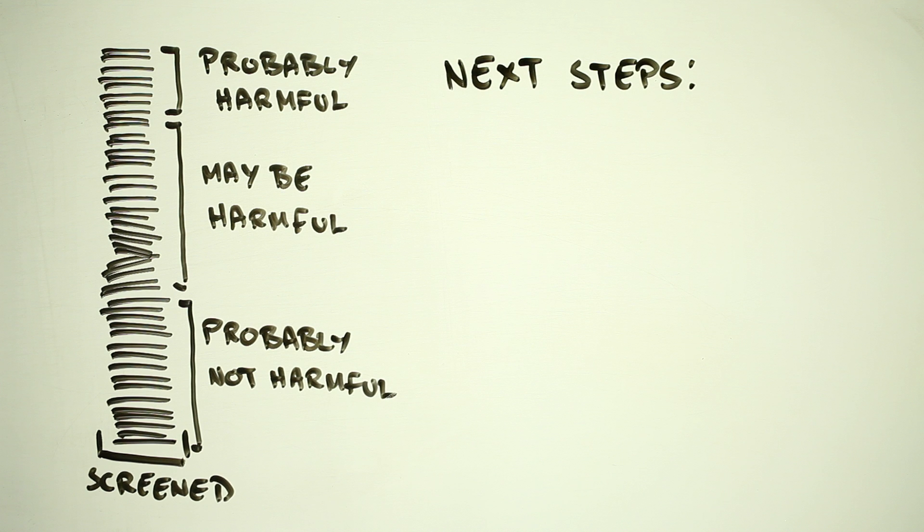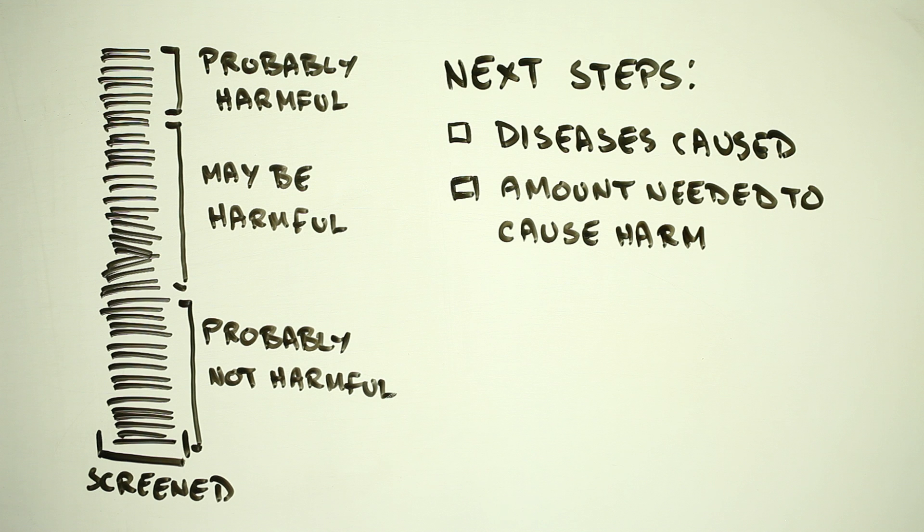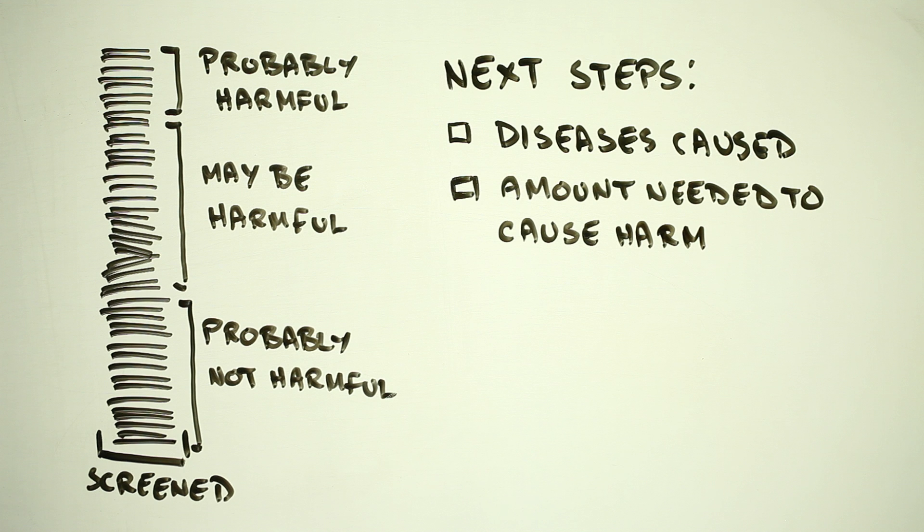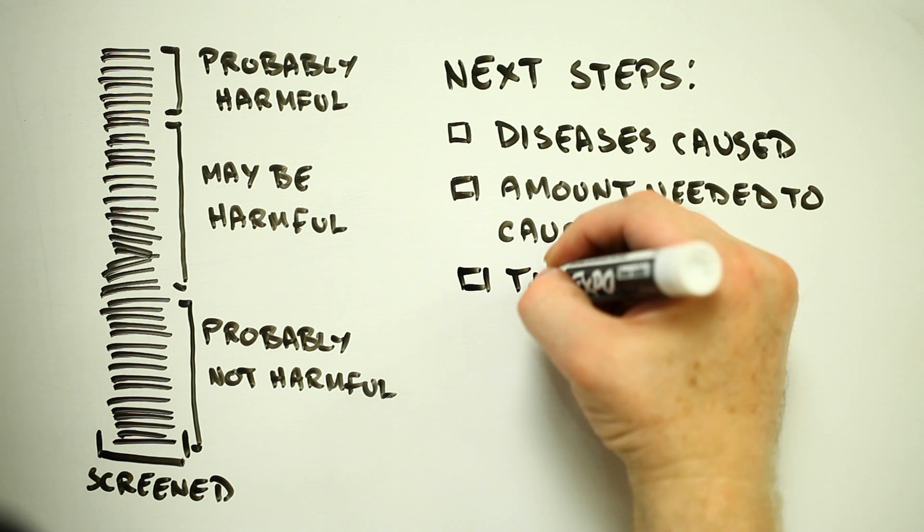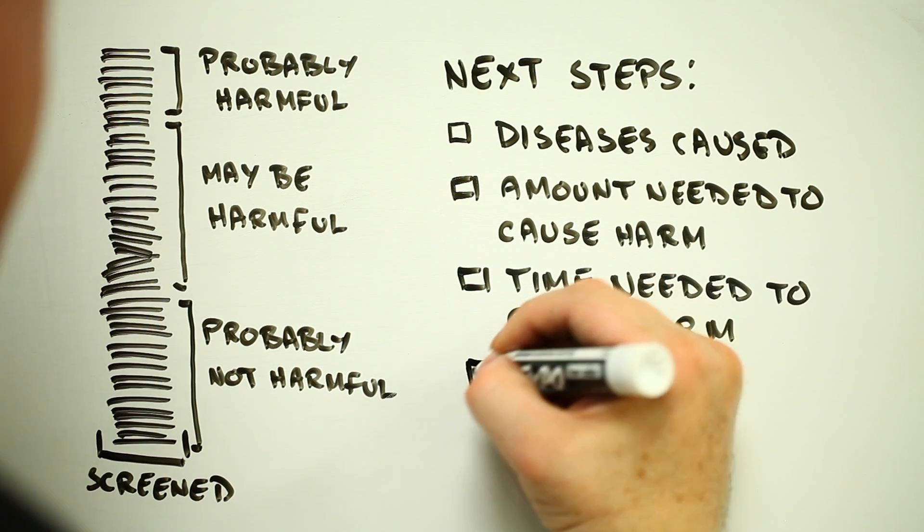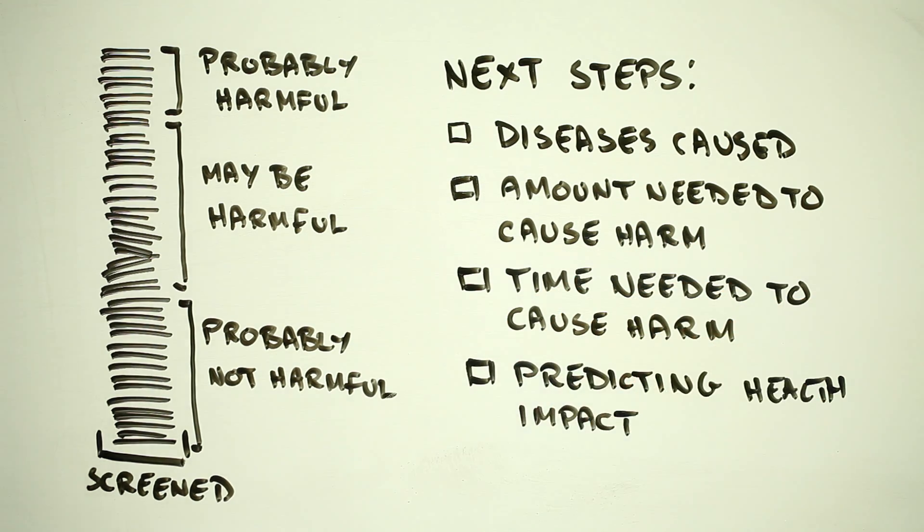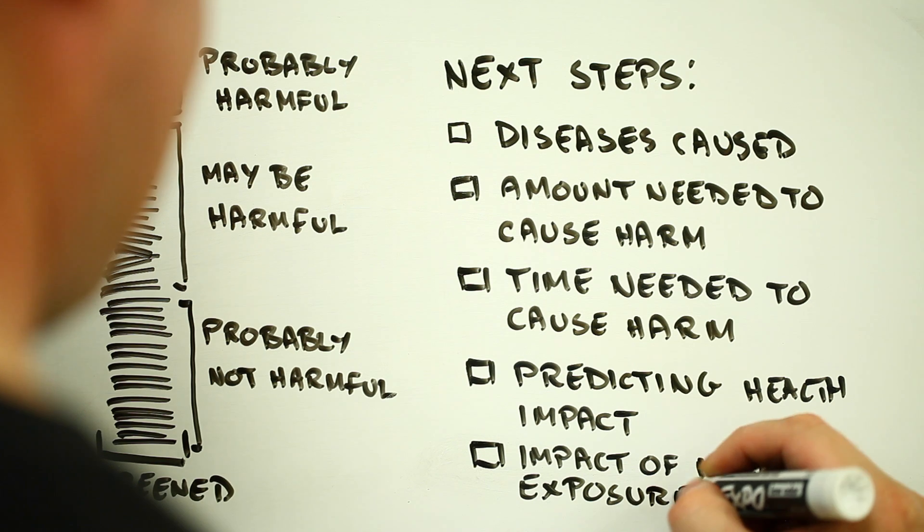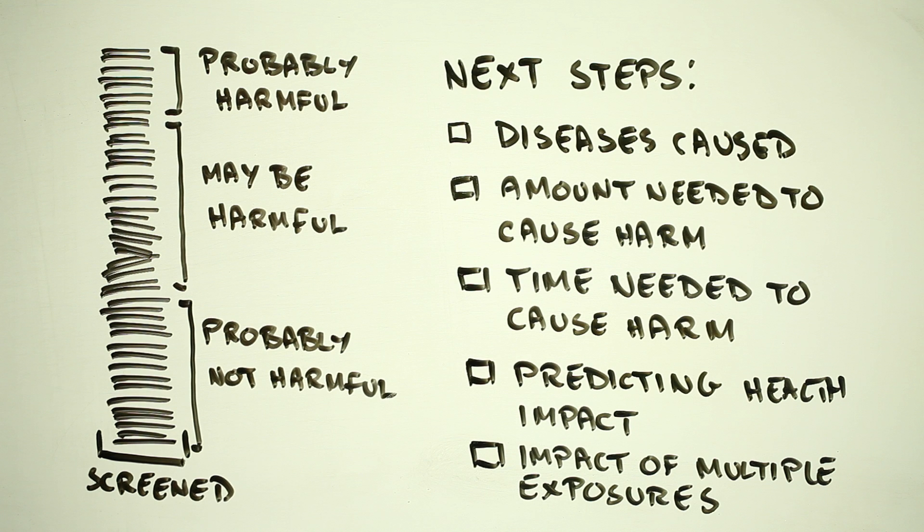For these chemicals, we still need to use animals to better understand the actual diseases they're likely to cause. And as always, we also need to understand how much of something causes harm, not just its potential to cause harm. But the more research we do on predicting what happens in animals and humans from high-throughput screening and computational biology, the more we can refine, reduce, and ultimately replace the use of animals in toxicity testing.